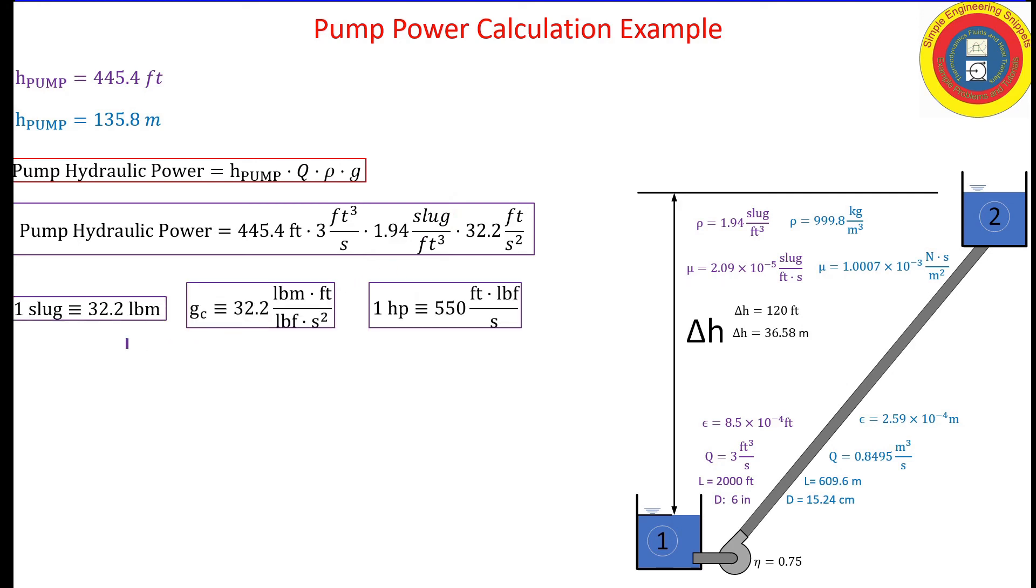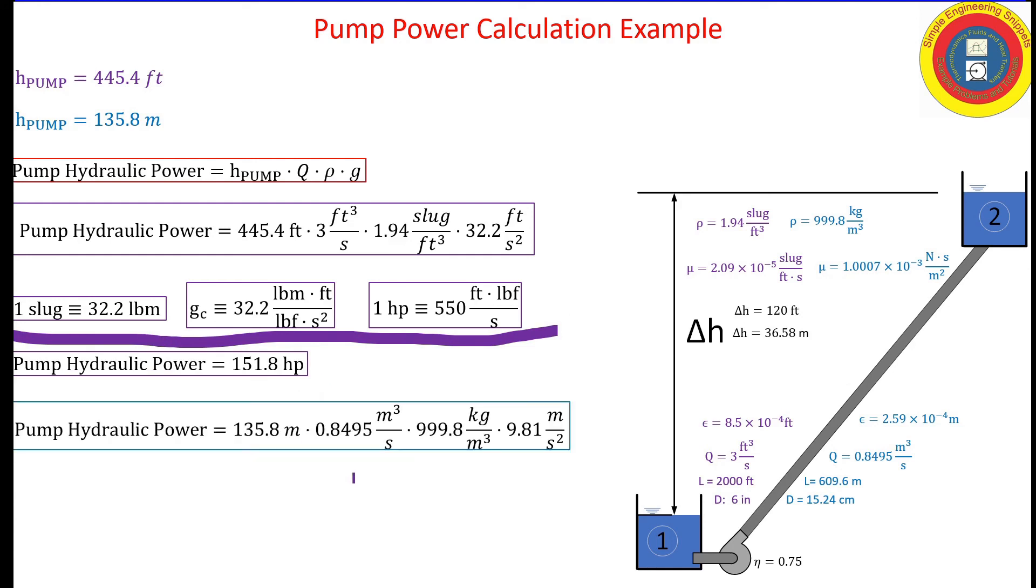When we do that, we get essentially 152 horsepower. SI is much cleaner. We get 113.2 kilowatts.